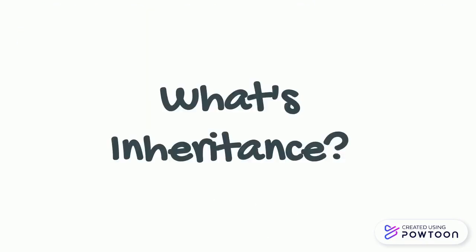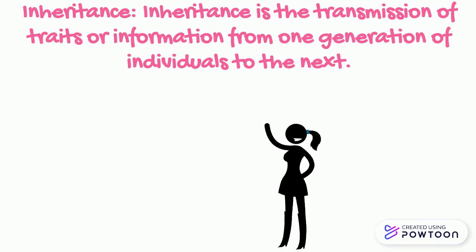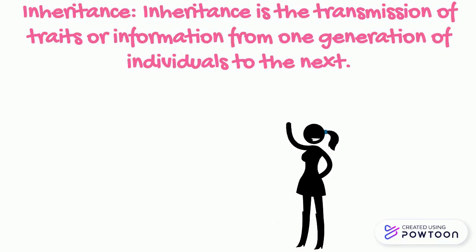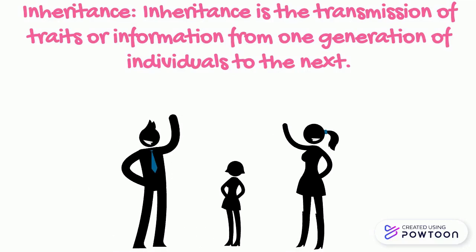Inheritance is another key component of evolution. Inheritance is the transmission of traits or information from one generation of individuals to the next. For example, if someone made it past selection, that means they're more likely to be able to have offspring which can inherit their traits.